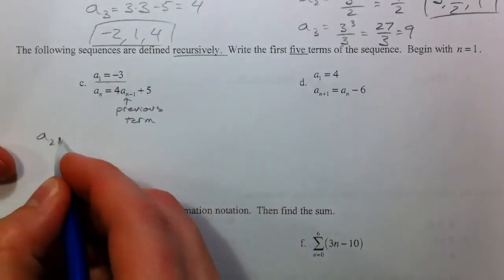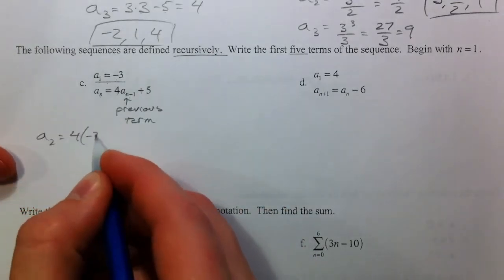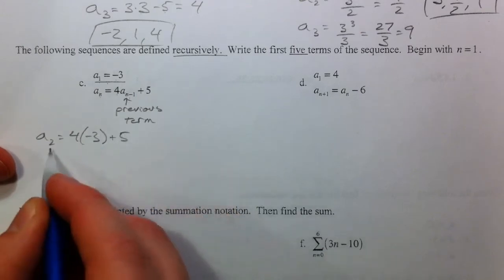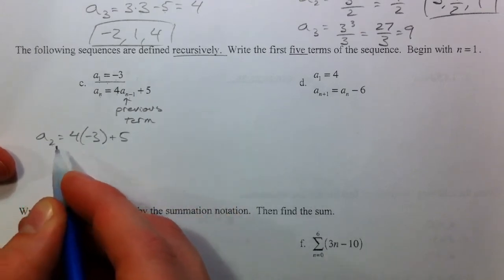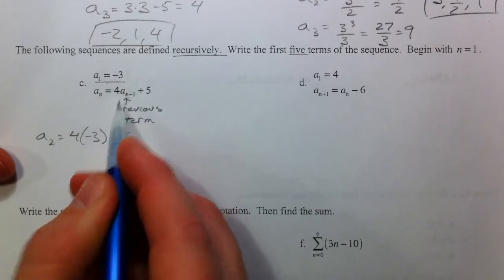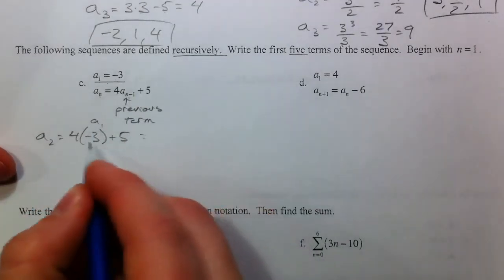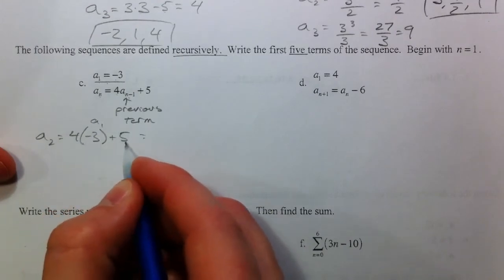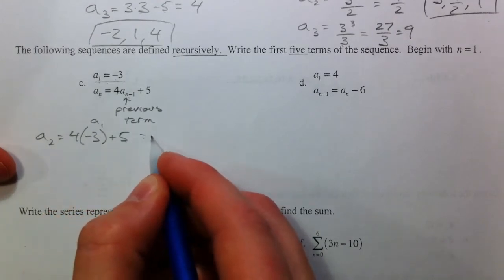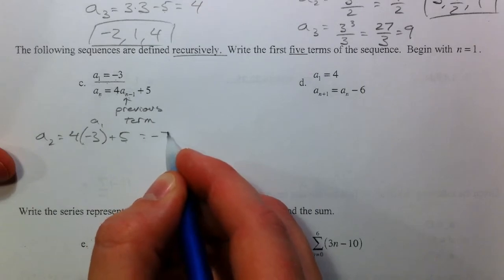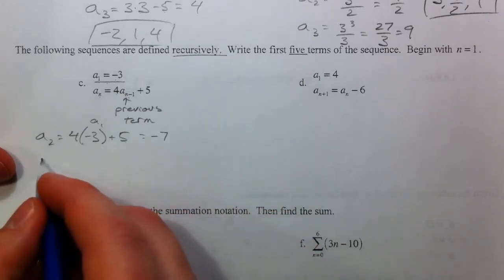So this is a sub 2, just going to be 4 times negative 3 plus 5. Because if we want to find a sub 2, 2 minus 1 is 1. So we're going to use a sub 1 to get there. So negative 12 plus 5 is negative 7. 4 times negative 3, negative 12.